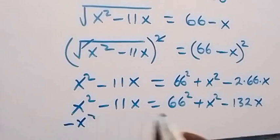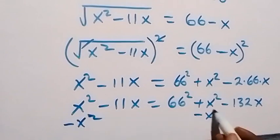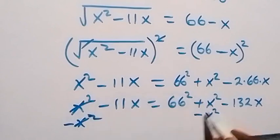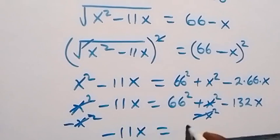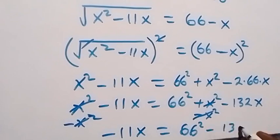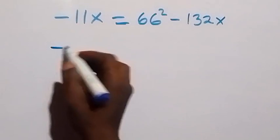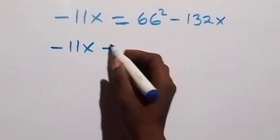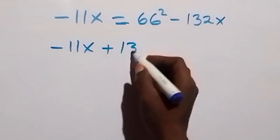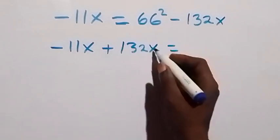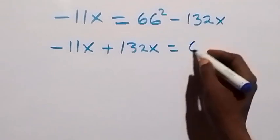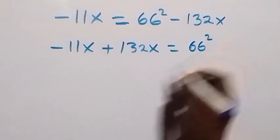Subtracting x squared from both sides, the x squared terms cancel out. We have minus 11x equals 66 squared minus 132x. Bringing the x terms together: minus 11x plus 132x equals 66 squared.